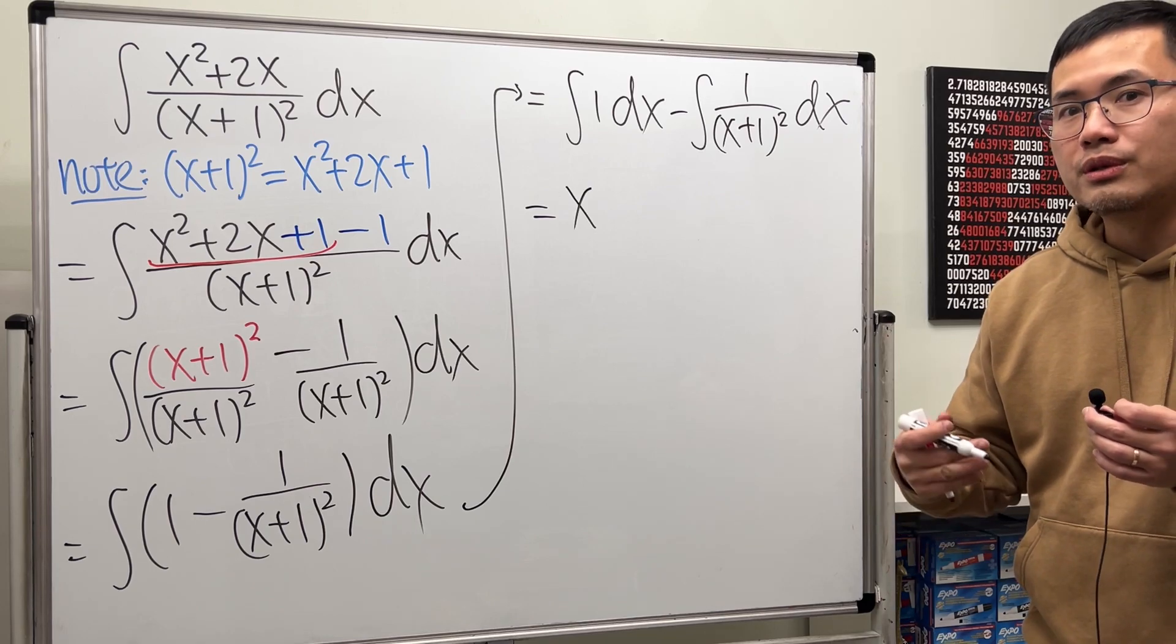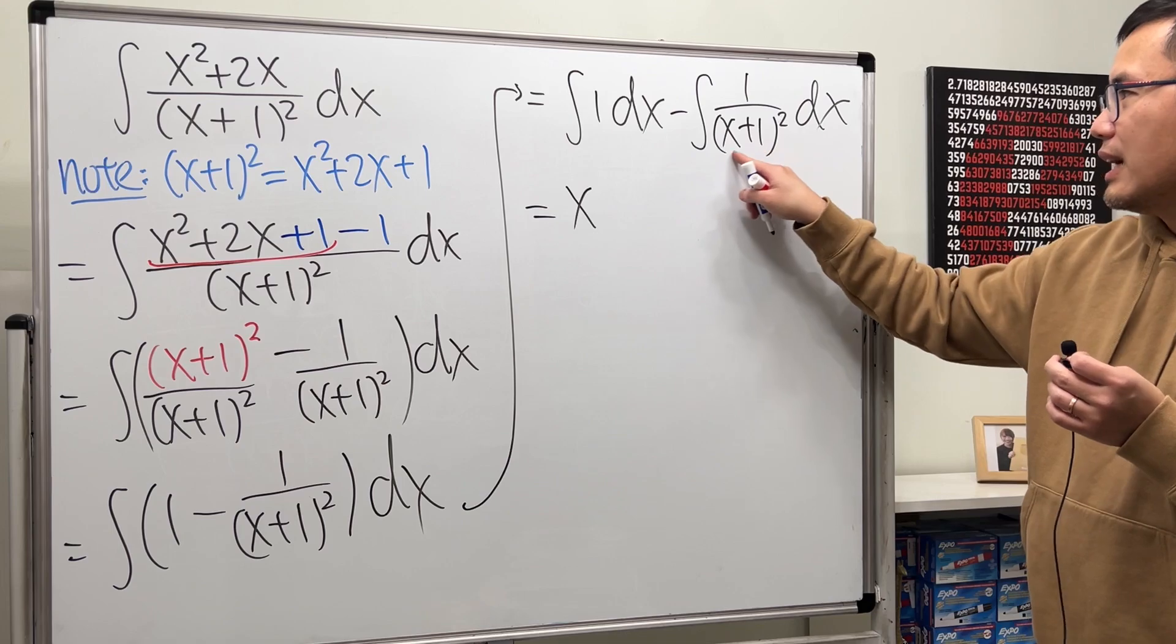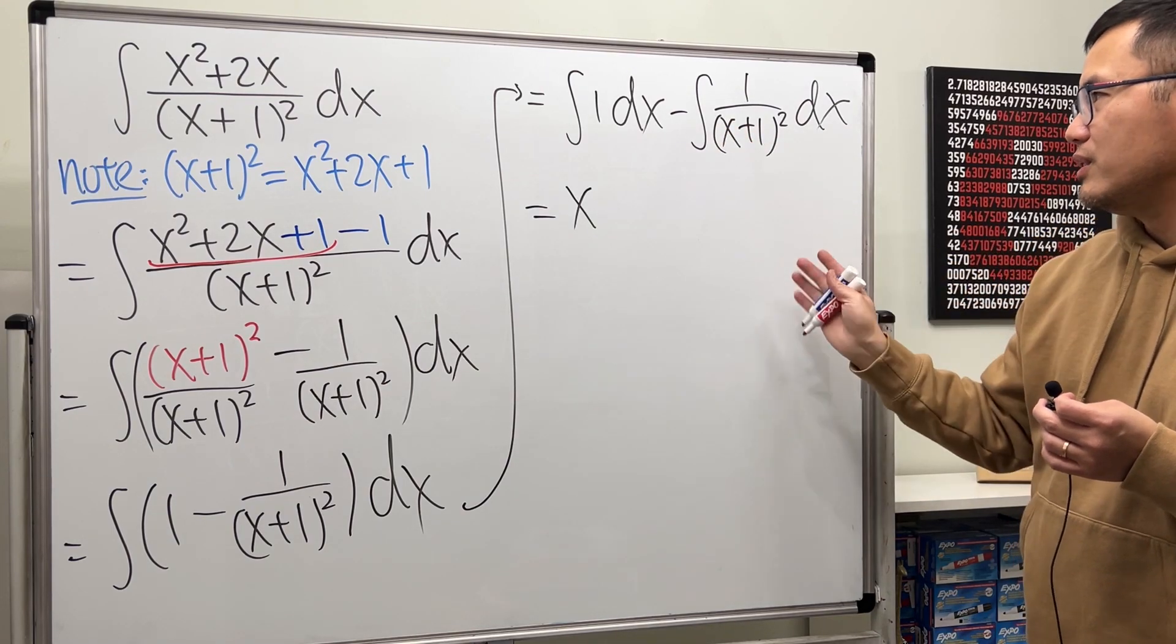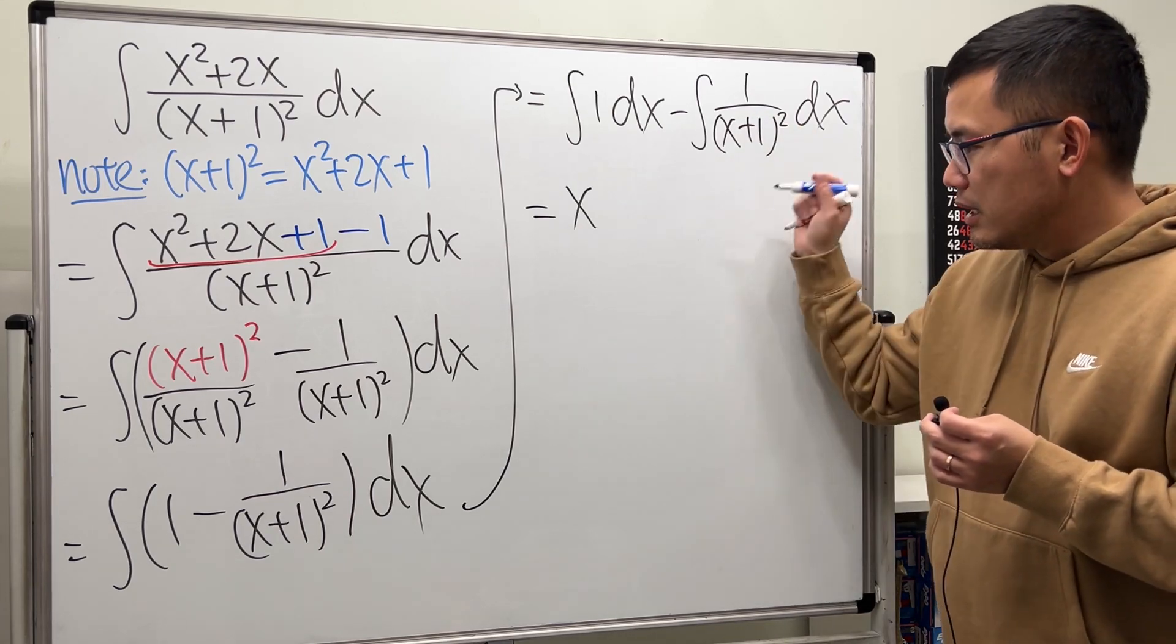But for this right here, we will have to do some u-sub. It's not so bad though, because this right here has no numbers in front of the x squared. And this is just x to the first power, so it's not so bad. Let me show you.